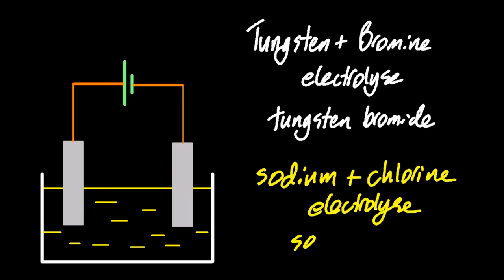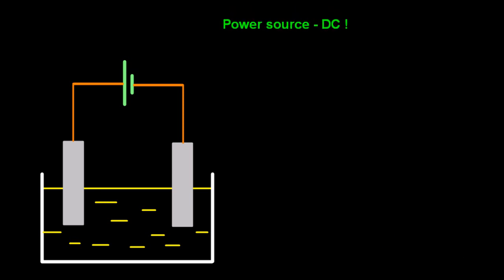Again, sodium and chlorine, you're not going to find those in nature. So zap some sodium chloride and you'll get both of them. The power source has to be DC, direct current, that means that the electrons only go one way in the external circuit.